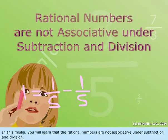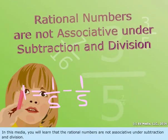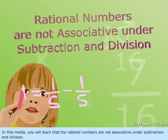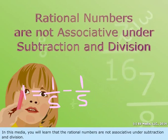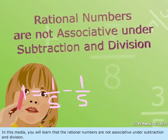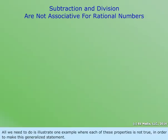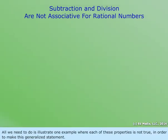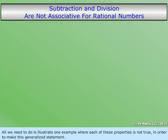In this media, you will learn that the rational numbers are not associative under subtraction and division. All we need to do is illustrate one example where each of these properties is not true in order to make this generalized statement.